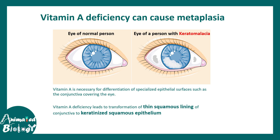Another example of metaplasia is vitamin A deficiency, which can lead to keratomalacia. Basically, the thin squamous lining of the conjunctiva gets keratinized and becomes keratinized squamous epithelium. This is another example of nutrient deficiency-induced metaplasia.